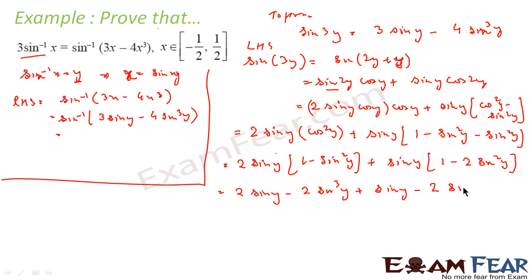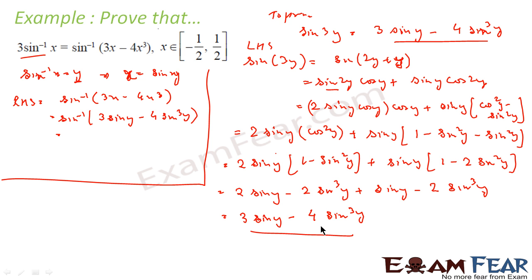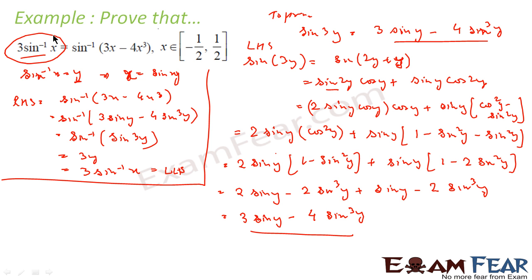After expanding, we get 2 sin y − 2 sin³y + sin y − 2 sin³y, which simplifies to 3 sin y − 4 sin³y. This is exactly what we needed to prove. Thus sin 3y = 3 sin y − 4 sin³y, so sin⁻¹(sin 3y) = 3y = 3 sin⁻¹x, and RHS equals LHS.